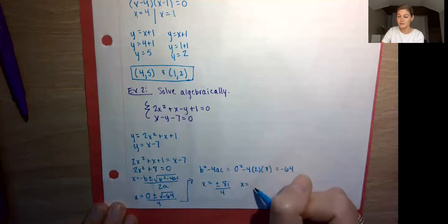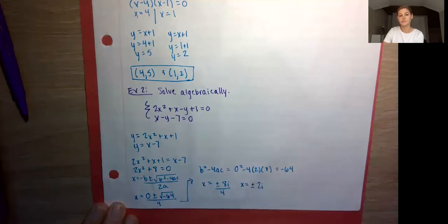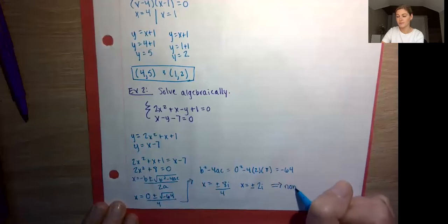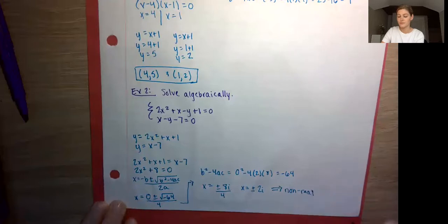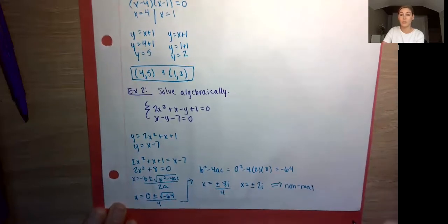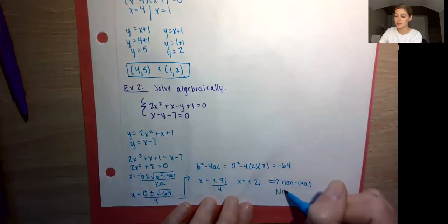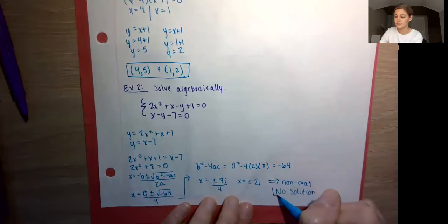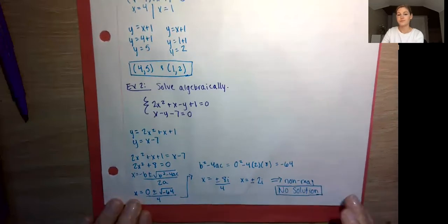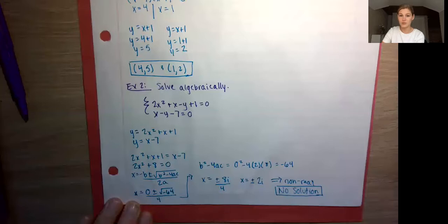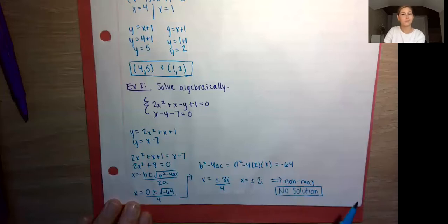If we have i in our answer, that tells us our solutions are non-real — they're imaginary. So in this case, our parabola and our line don't intersect: there is no solution. We could have realized this right when we got −64 as the discriminant. If you get a negative discriminant when doing these, you can stop there and say no solution — the solutions are imaginary, meaning they don't intersect.